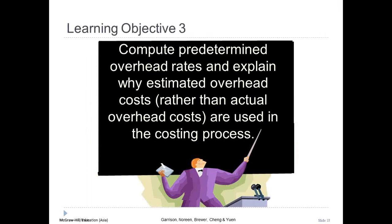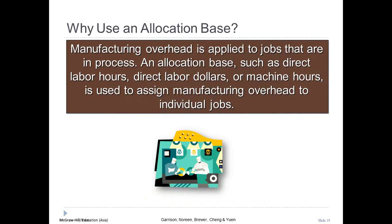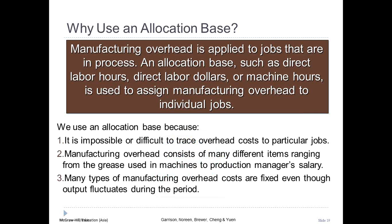Let's compute predetermined overhead rates and explain why estimated overhead costs, rather than actual overhead costs, are used in the costing process. Manufacturing overhead is applied to all jobs in process using a base we believe causes overhead costs to be incurred — some companies use direct labor hours or machine hours. We must allocate overhead because it is difficult, if not impossible, to actually trace overhead costs to a particular job. For example, it would be impossible to accurately trace the amount of grease consumed by machinery to manufacture one unit of output.